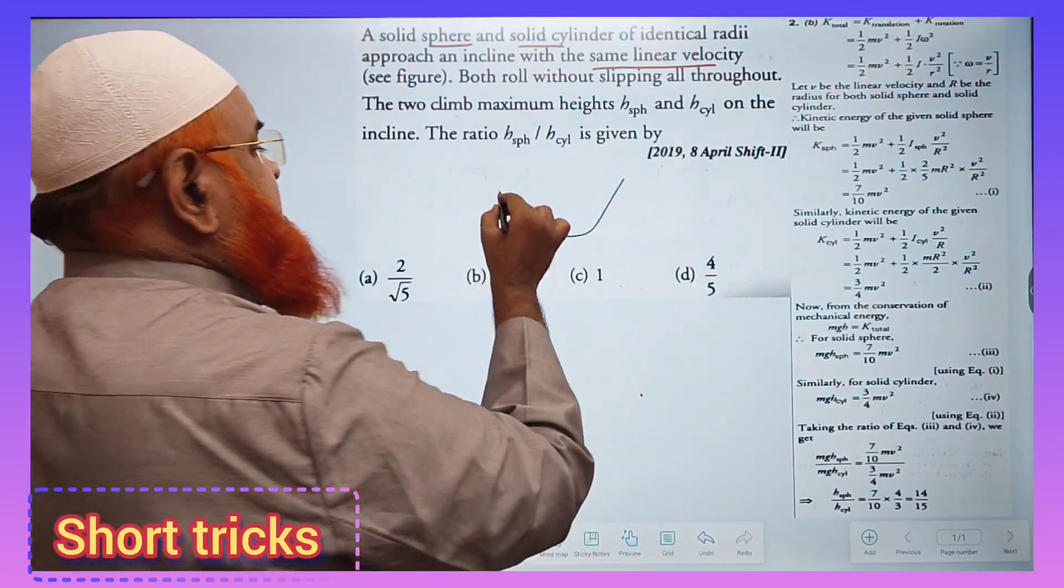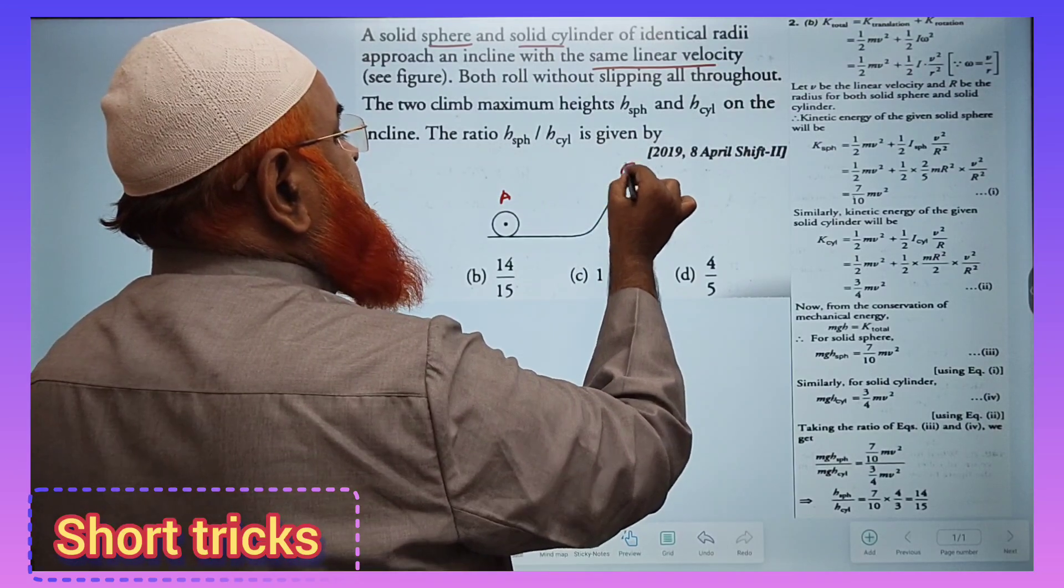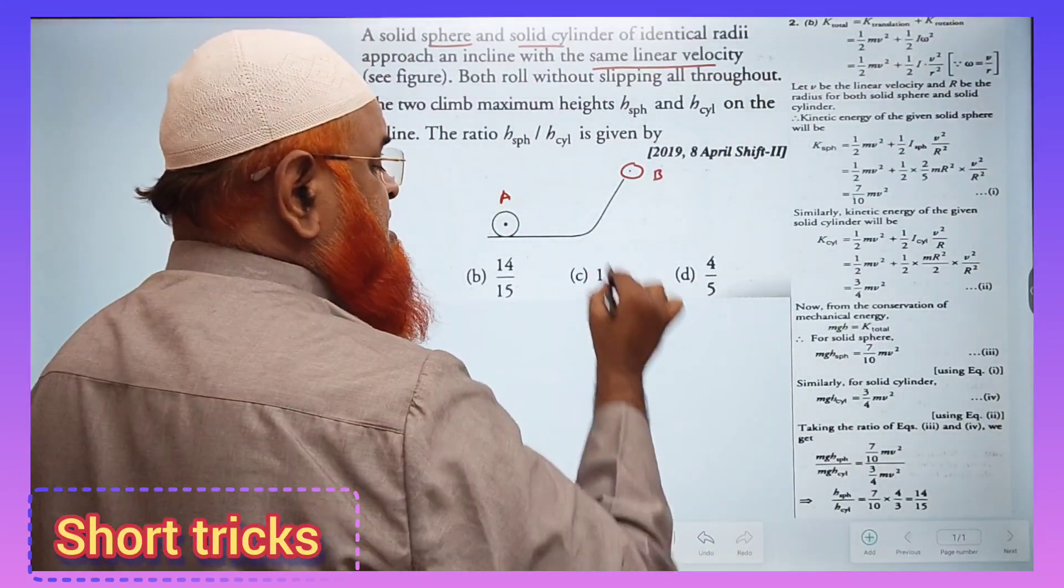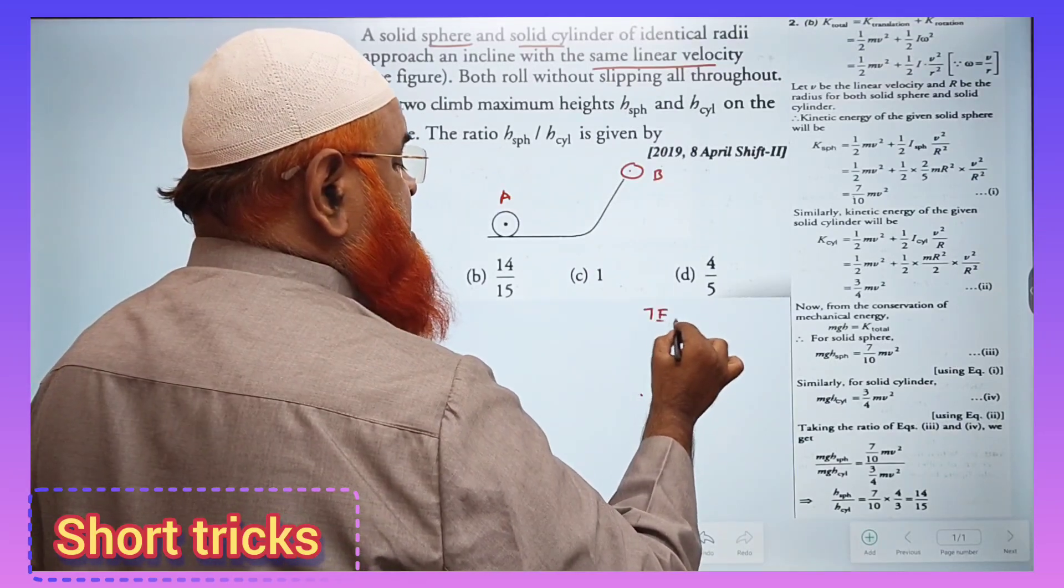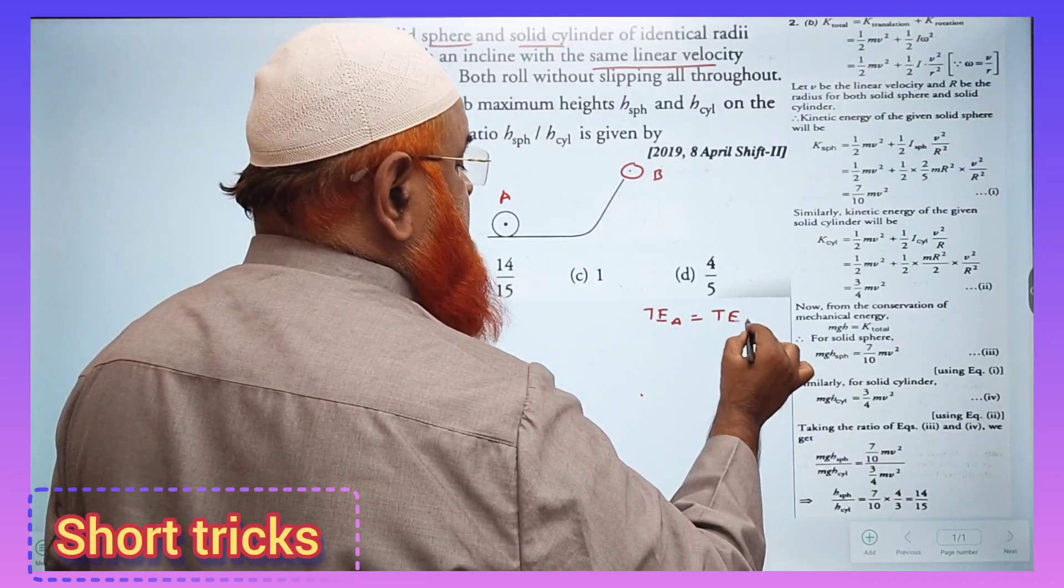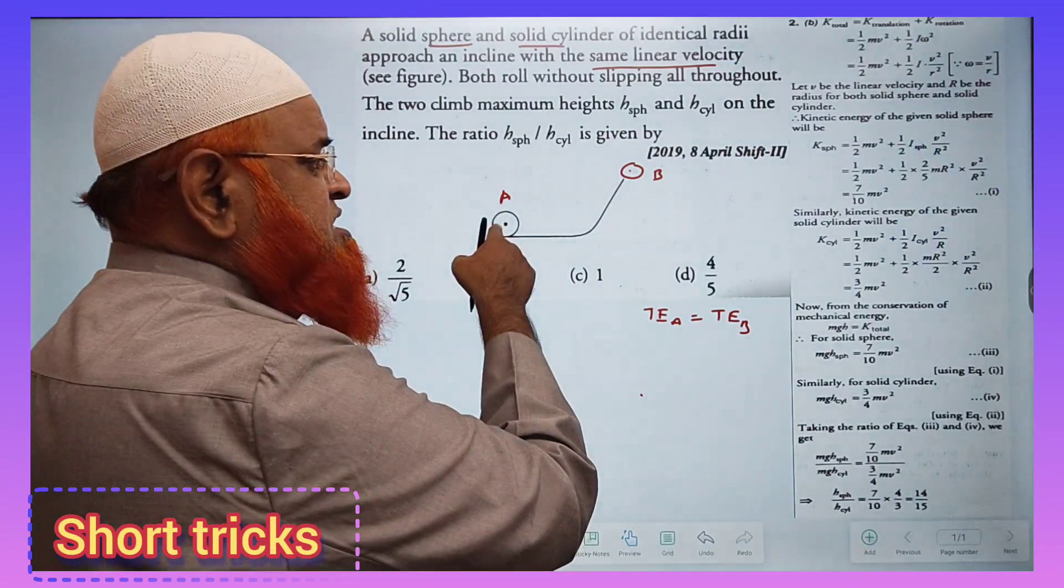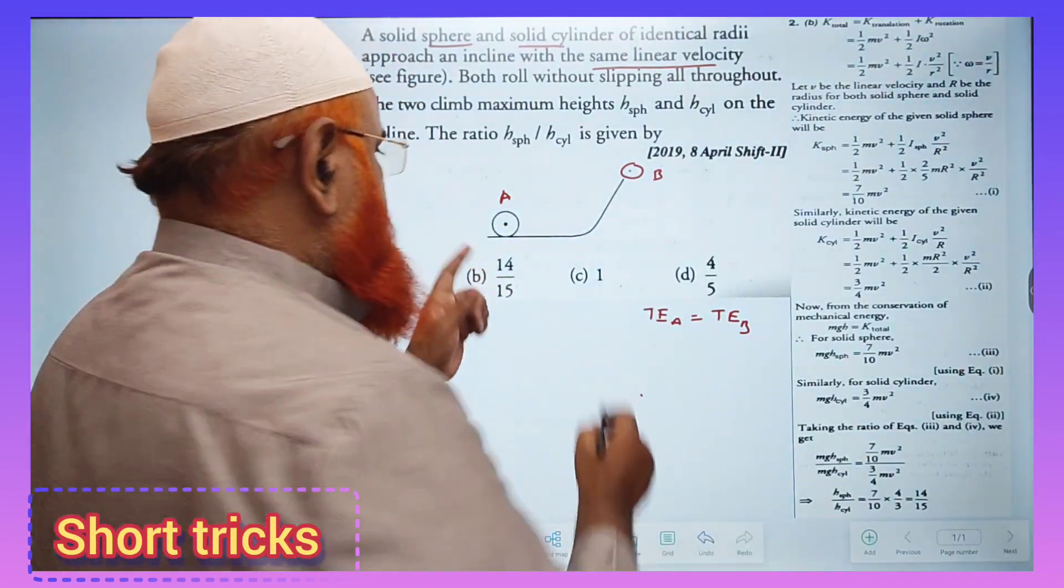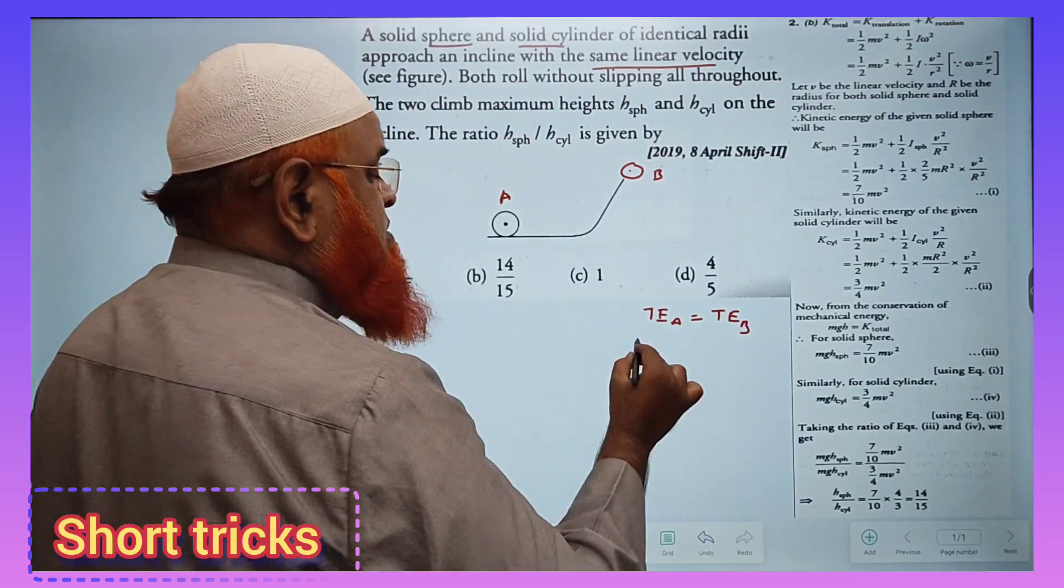Let us take this point as A, and when the body has reached a certain point, that is B. The total energy at A equals total energy at B. At A, kinetic energy is there; at B, only potential energy is there.